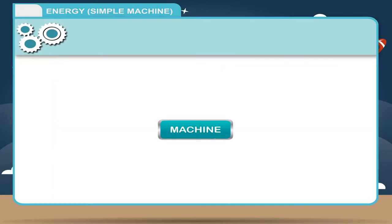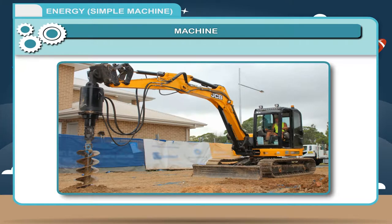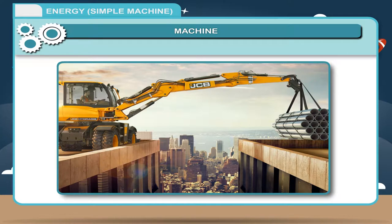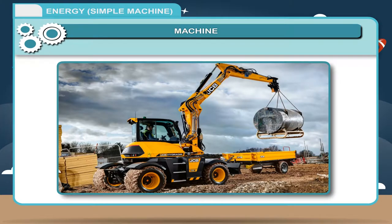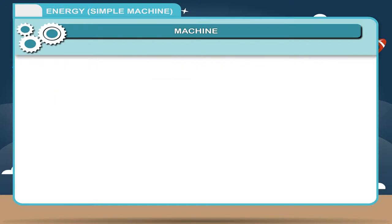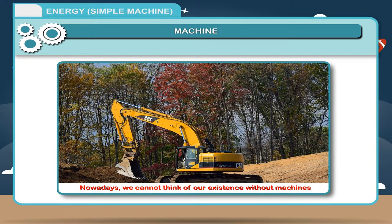Machine: A machine is a device which overcomes a large hindrance, resistance, by applying the force in a convenient direction. Like in case of pulley, the effort is along the direction of force of gravity. It helps us to do the work easily. Nowadays, we cannot think of our existence without machines.